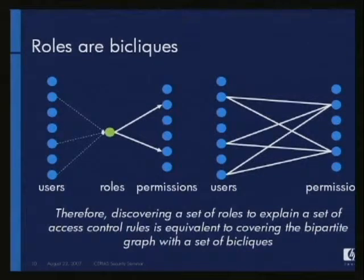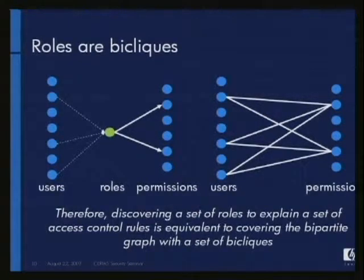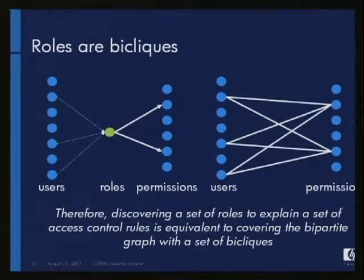The fundamental observation we've made is that roles are effectively bicliques. Bicliques are a subset of the vertices in the bipartite graph such that they're fully connected. On the left you have three users connecting into a role, and an equivalent biclique has those same three users connecting to the same two permissions. So in order to transform the bipartite graph to a tripartite graph, all we really have to do is come up with a set of bicliques — correspondingly roles — that cover exactly all the edges in the original bipartite graph. If we can come up with such a covering, we've described the existing access control environment.